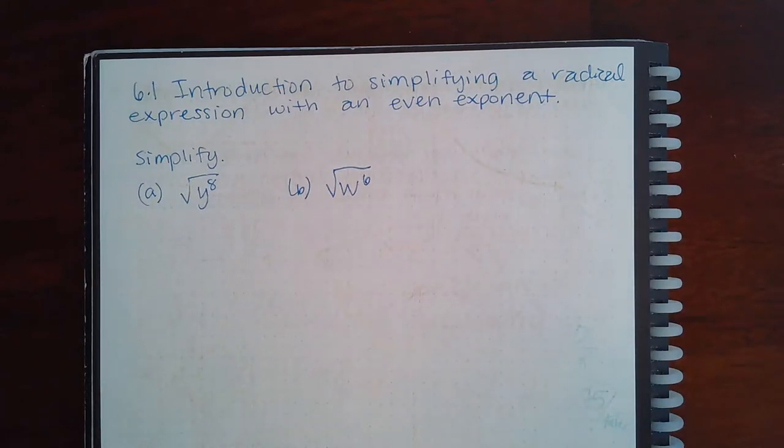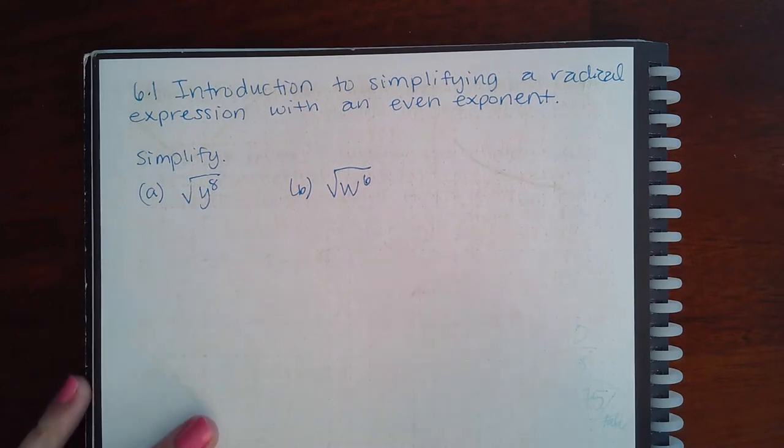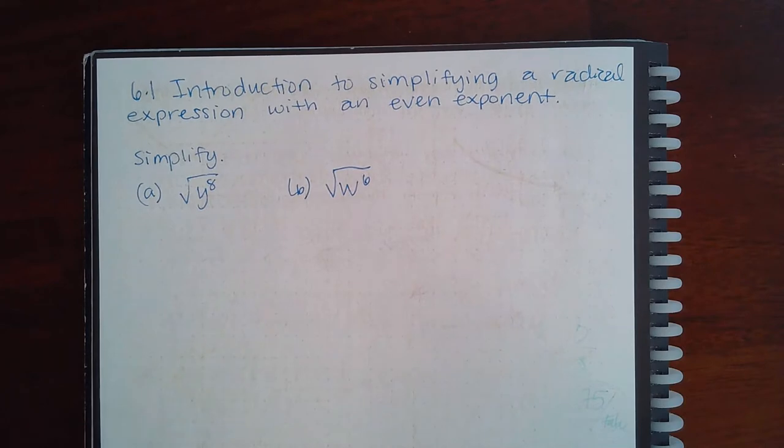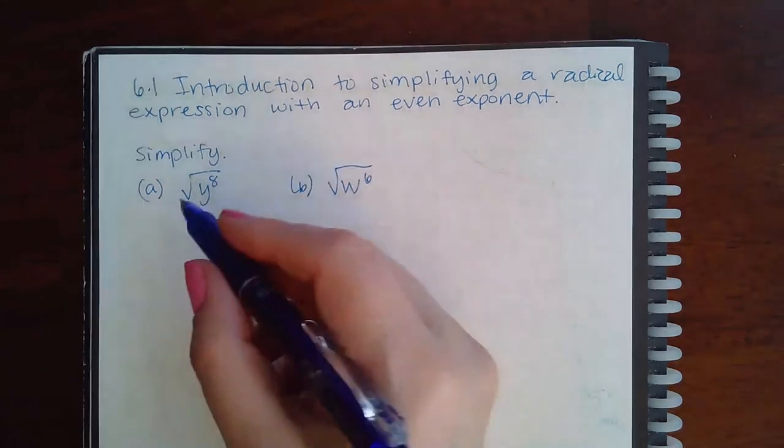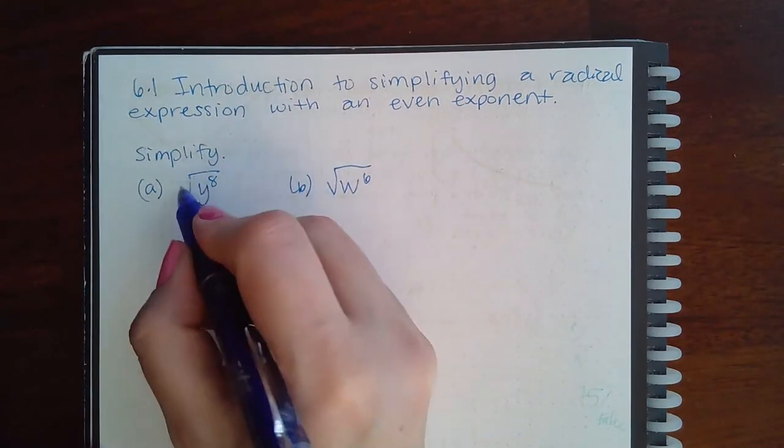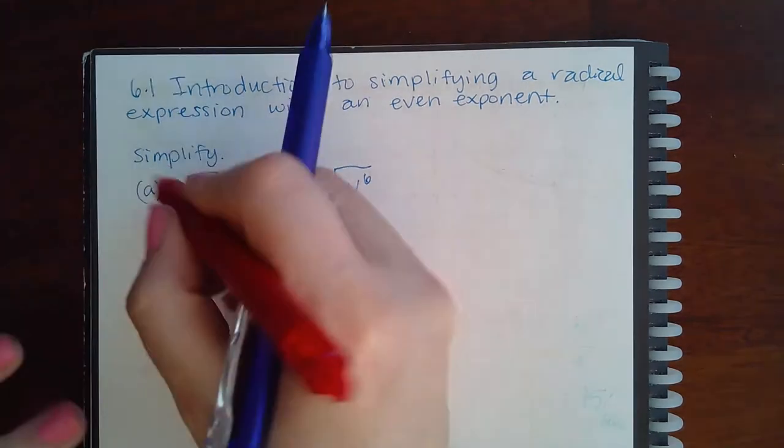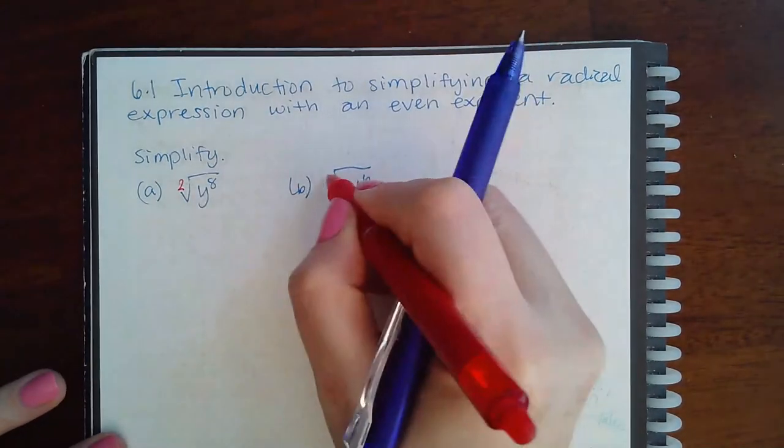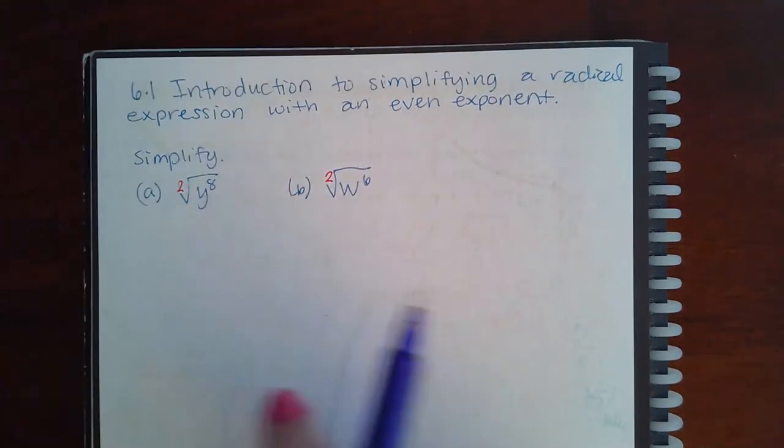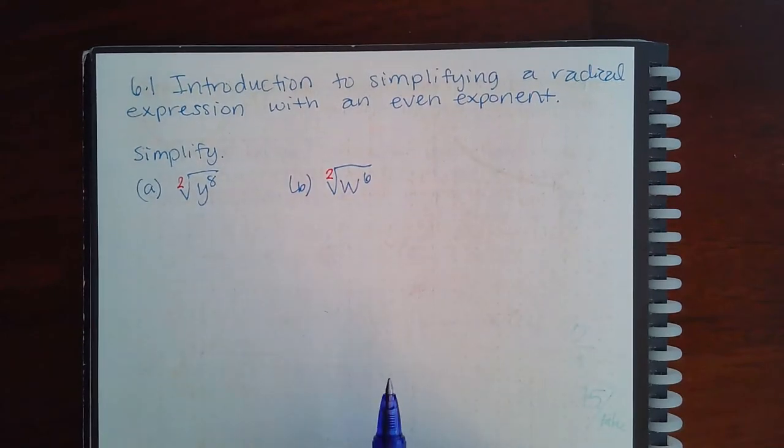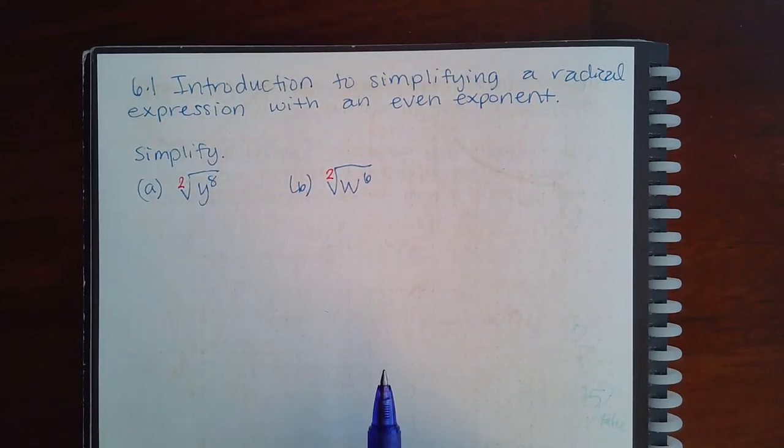Okay, here we have 6.1 introduction to simplifying a radical expression with an even exponent. So essentially what's happening is if I have my index as a 2 here, I'm going to put it in a different color. That means in order for... now I know we haven't gotten into rational exponents yet.